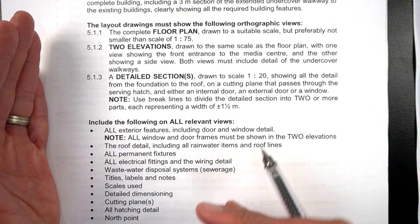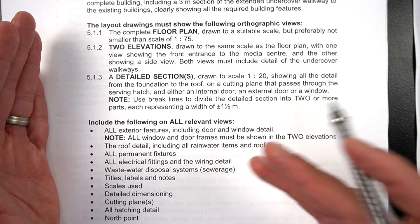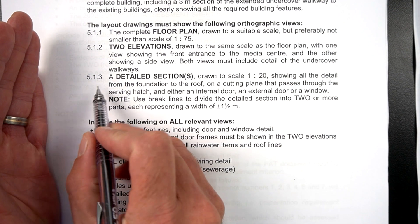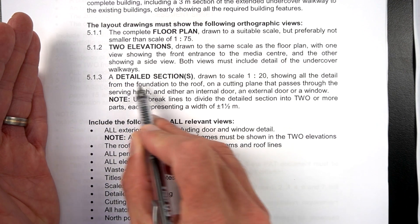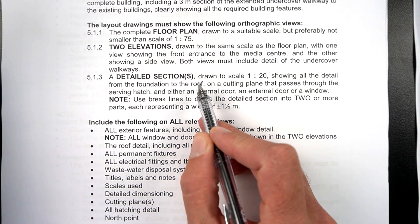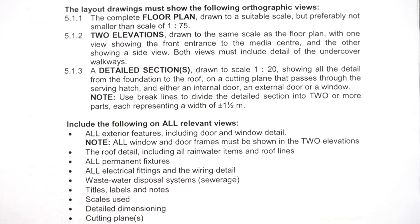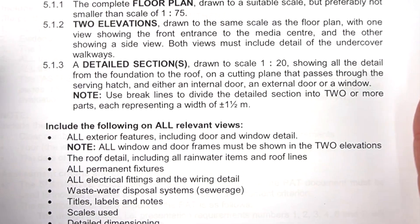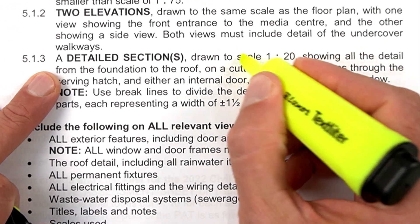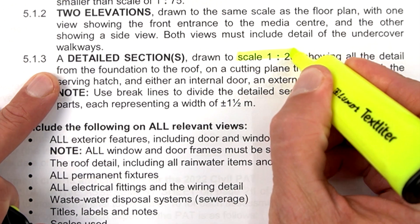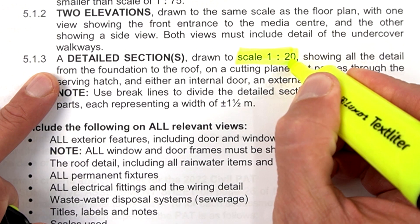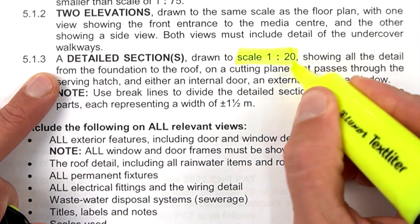Go to page 13 and look at section 5.1.3 - the detail section - to see exactly what is specified. In this PET, the detail section must be drawn to scale 1 to 20. You do not have a choice; that is the scale to be used.